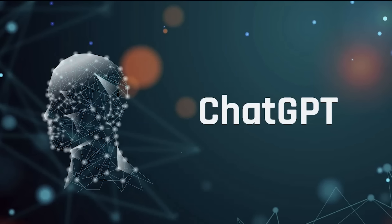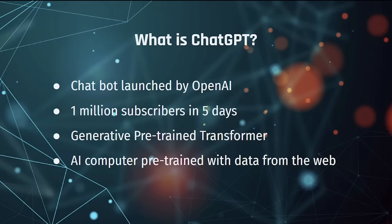But first, what is ChatGPT? ChatGPT is a viral sensation that reached 1 million subscribers in just five days. By contrast, to reach a million subscribers, it took 10 months for Facebook and two and a half months for Instagram.